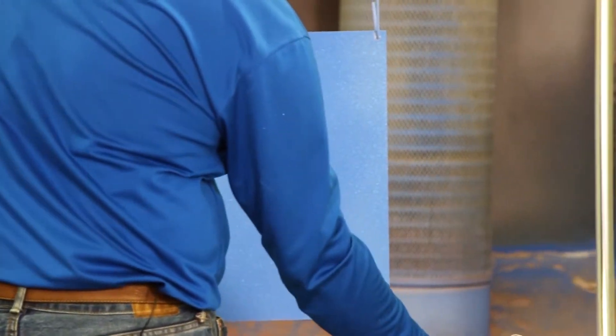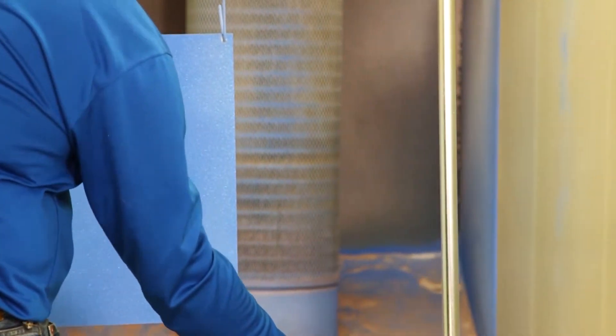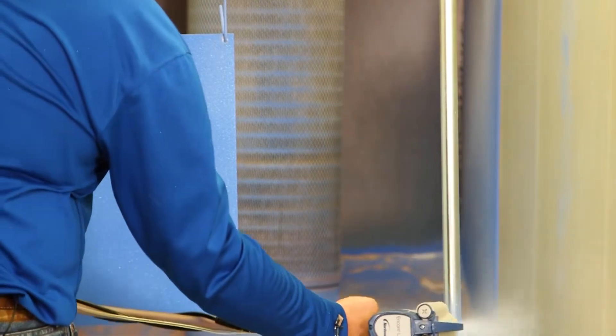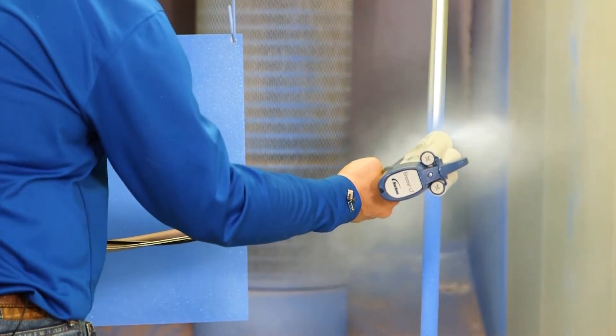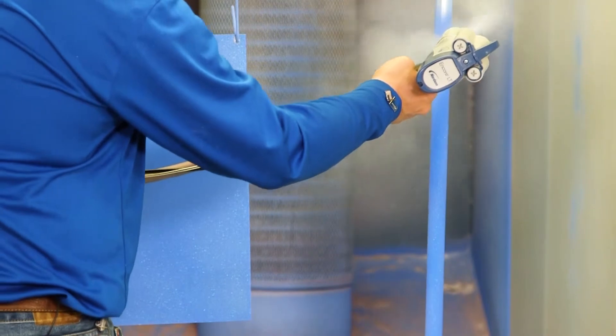Now when we get to the tubular metal, the powder is going to attract very well. However, you're going to see a lot of overspray, not exactly what we saw when we used the conical nozzle.